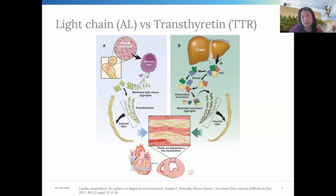The wild type TTR is previously known as senile cardiac amyloidosis, because it typically affects older males and presents as a late-onset hypertrophic restrictive cardiomyopathy. It's often preceded — even by years — by carpal tunnel syndrome, or even spinal stenosis, or both. As you get older, the normal TTR protein becomes unstable and more prone to misfolding and can cause these amyloid fibrils.